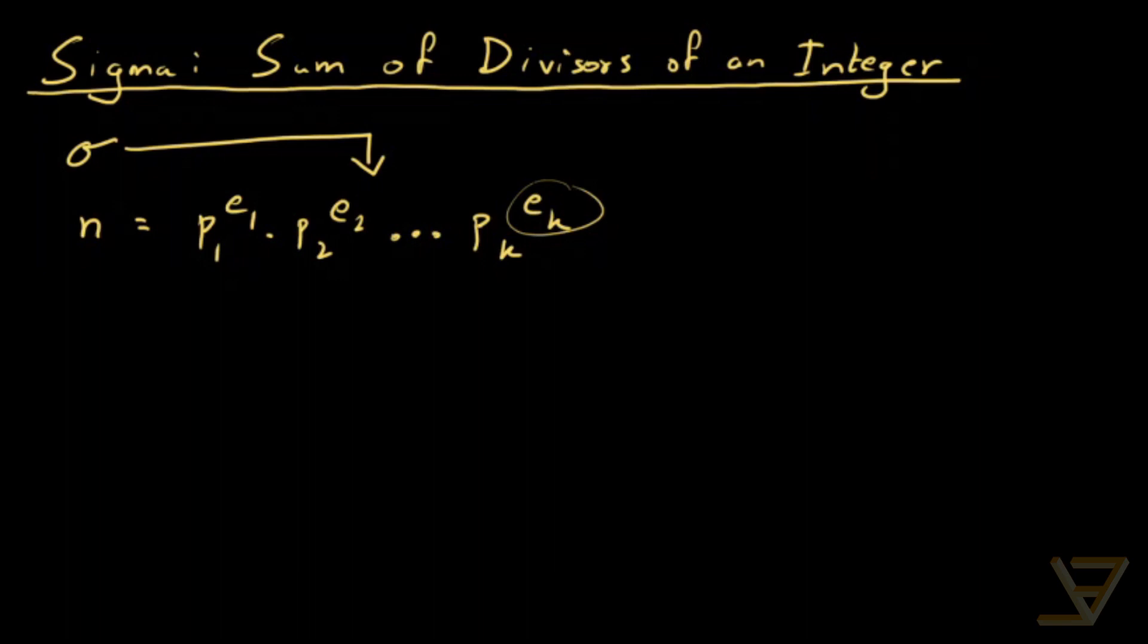So we're going to use a lemma. Recall that m divides n and m is positive if and only if a certain condition is true, which is that m is equal to p1 to the f1.